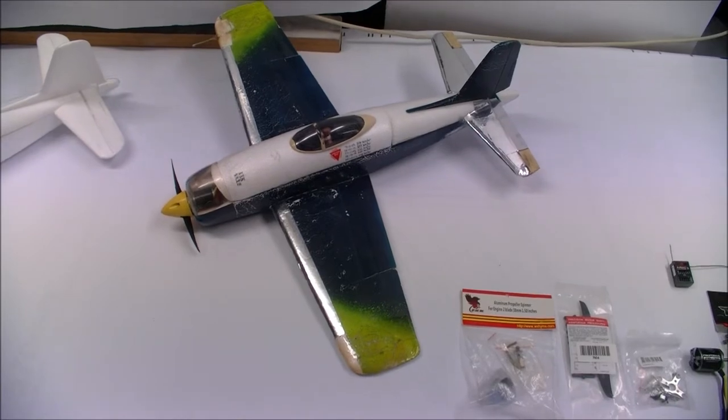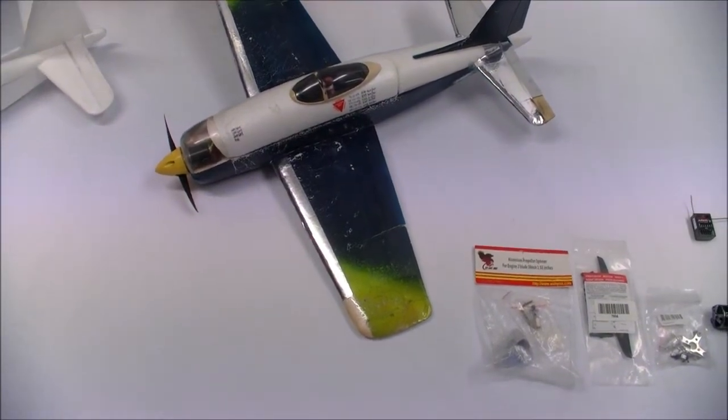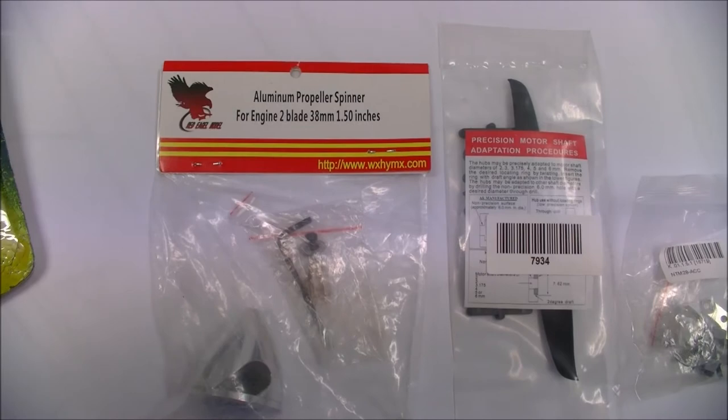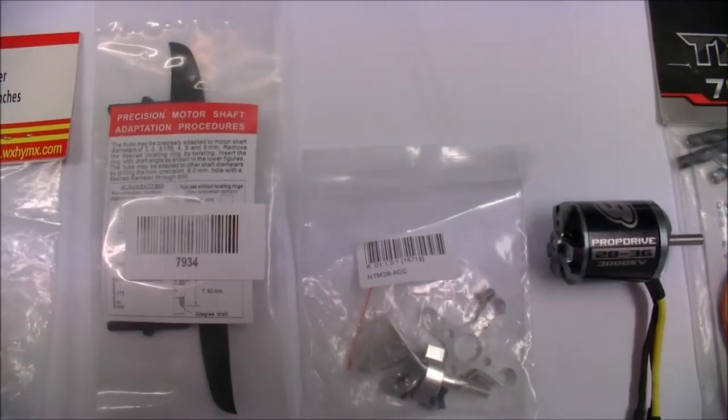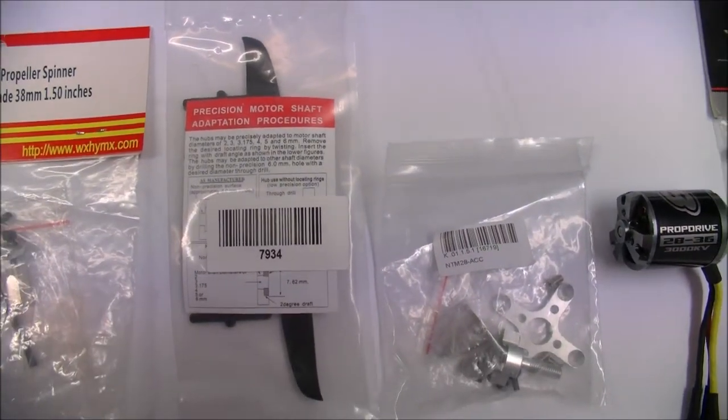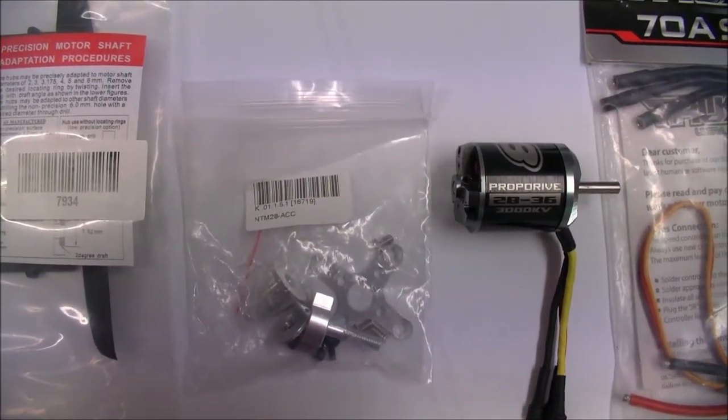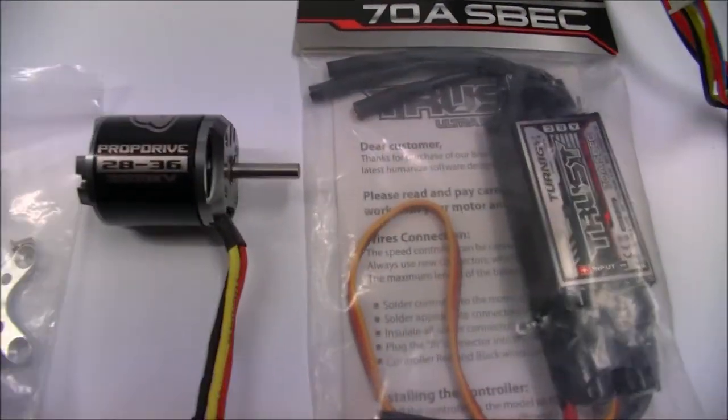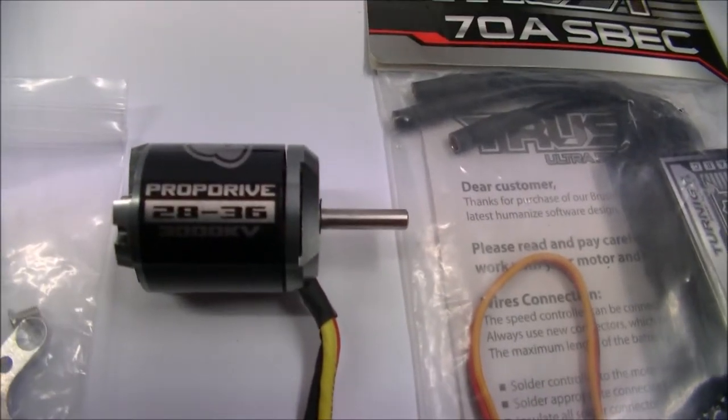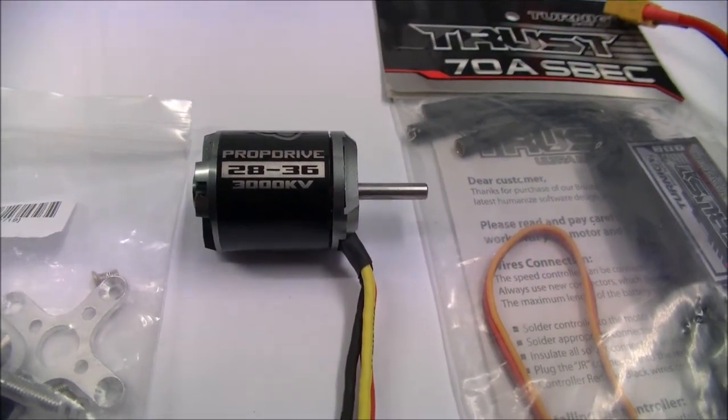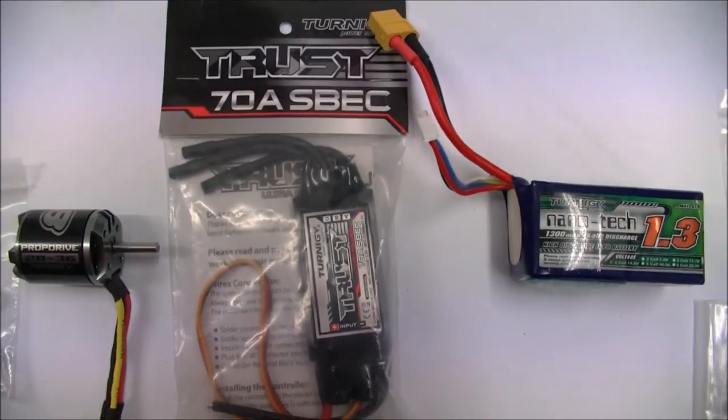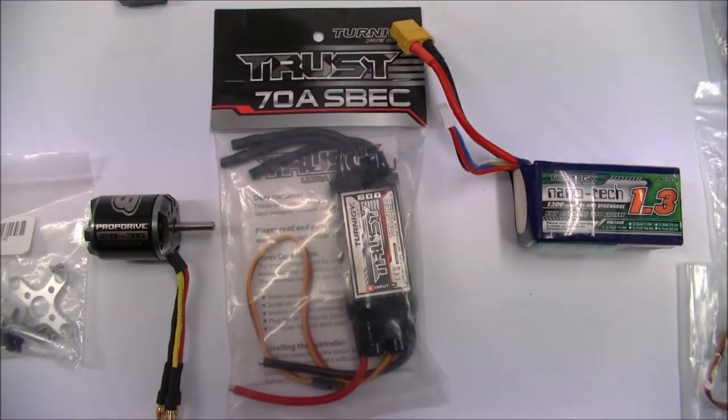Firstly we'll start with the basic hardware that's in this aircraft. Got one aluminum spinner, 5x5e prop, engine mount and prop adapter shaft. The secret weapon, the prop drive 2836 3000kv motor. Today I'll be using the Turnigy 70 amp speedy.